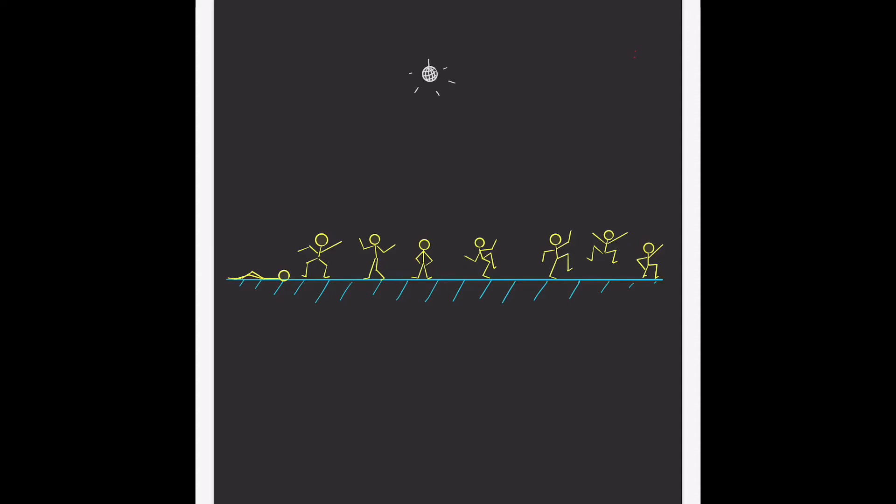Now, molecules of water behave sort of similarly to those dancers. They're moving around all the time and colliding with each other. So to visualize this, let's imagine a room. And one side of the room is warm and one side is cold.